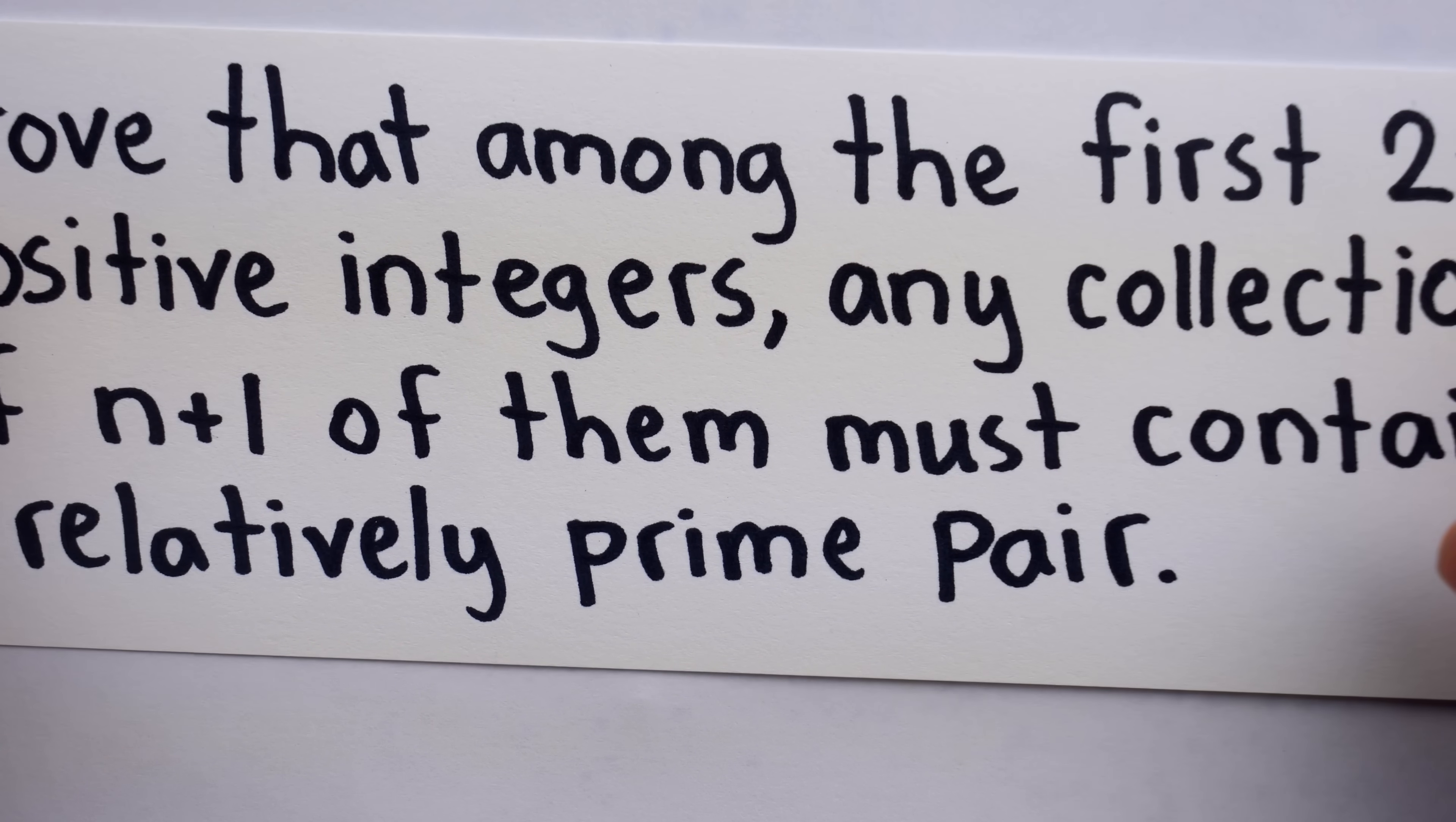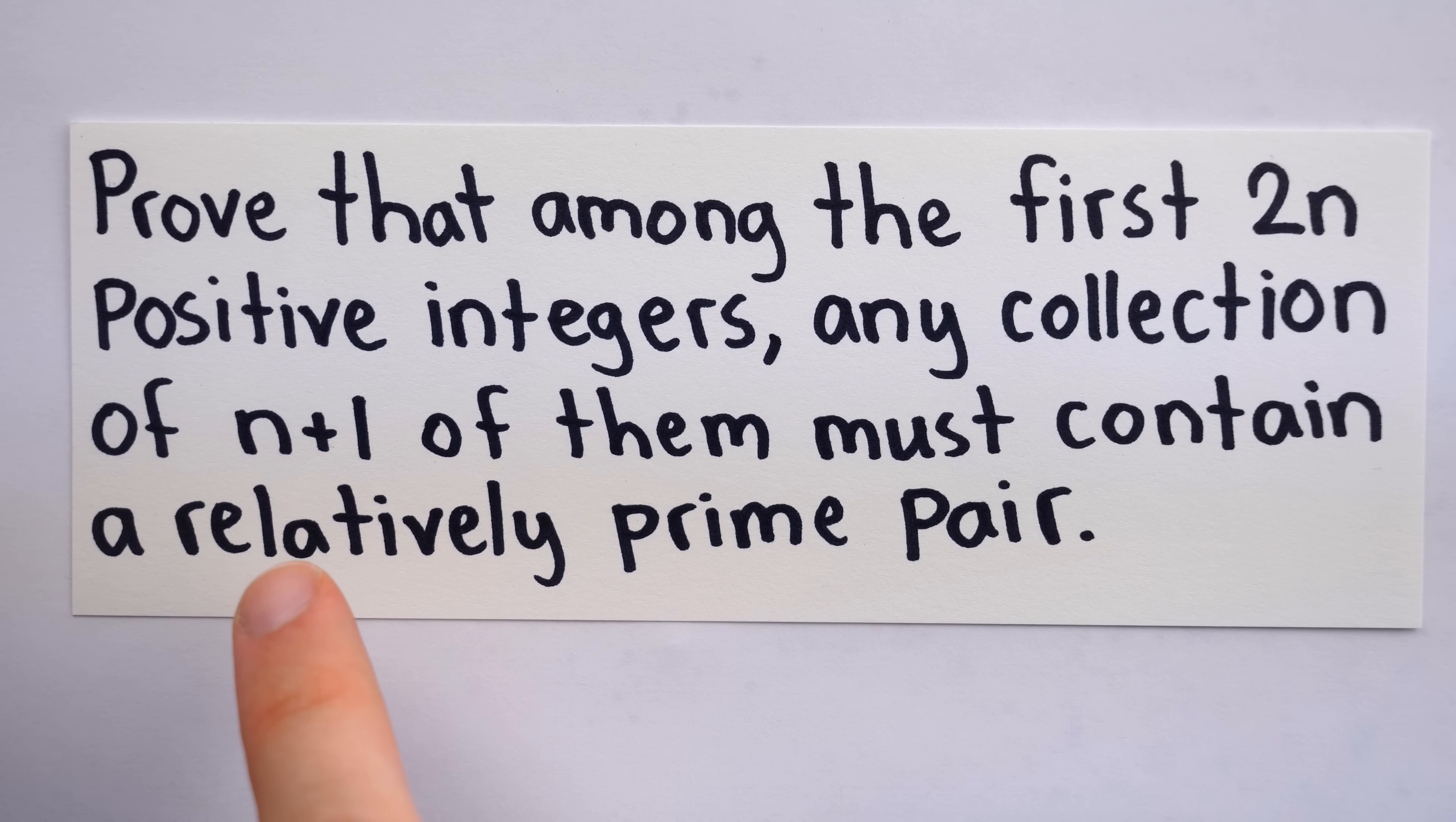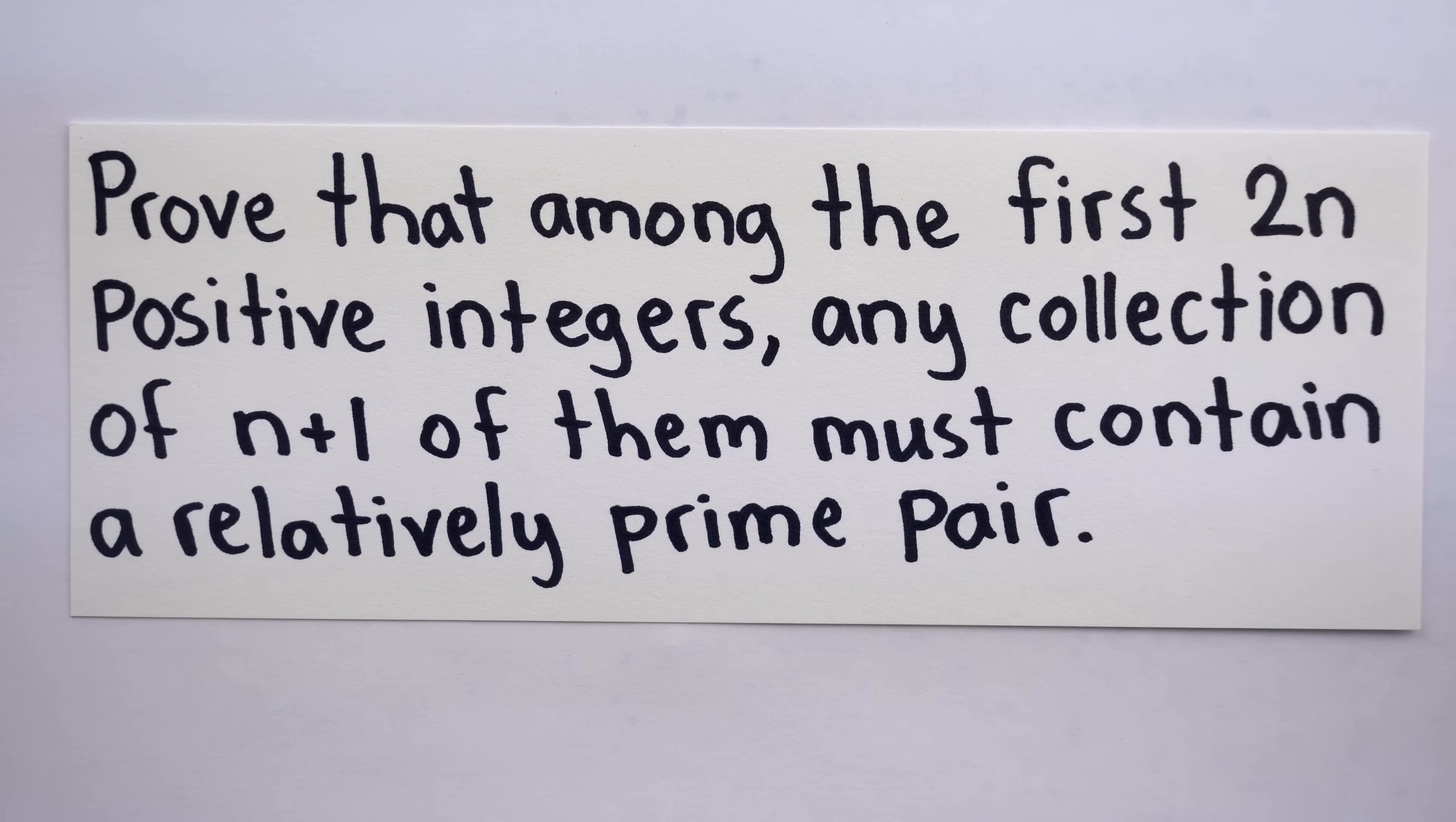Erdős gave him the following problem. Prove that among the first 2n positive integers, any collection of n+1 of them must contain a relatively prime pair. Let's make sure the problem statement is clear and see how long it takes you to solve it.